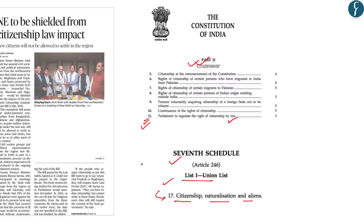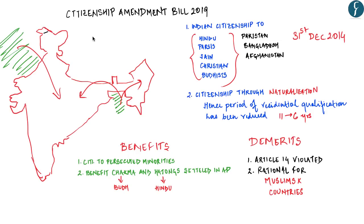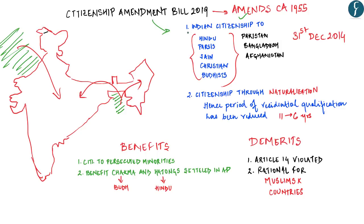The Citizenship Amendment Bill 2019 amends the Citizenship Act 1955 — the only act dealing with providing or taking away citizenship. The current status was that the bill was passed by the Lok Sabha but lapsed as it could not be passed in the Rajya Sabha. There are two important provisions: first, the grant of citizenship, and second, the conditions through which citizenship shall be granted.